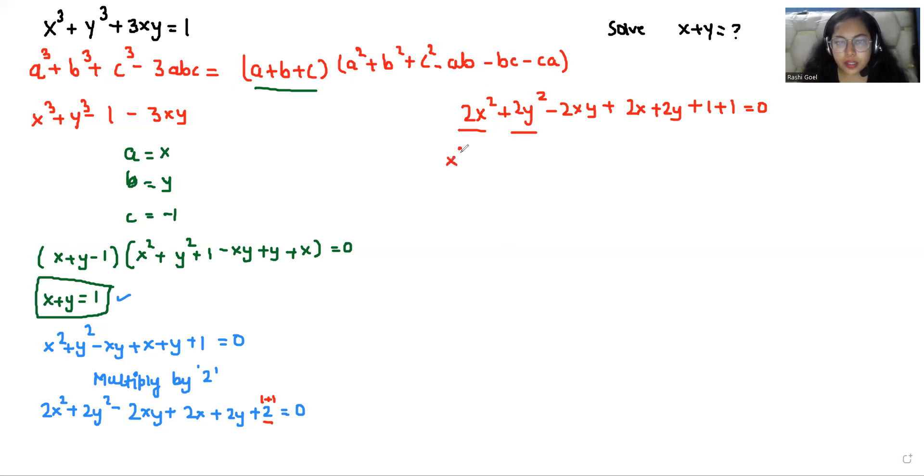Rearranging terms, I can write (x² + y² - 2xy) together, plus (x² + 2x + 1) together, and the remaining terms (y² + 2y + 1) equals 0.